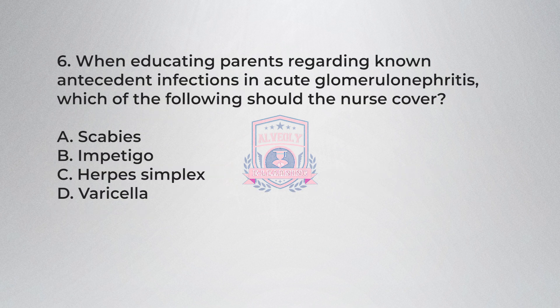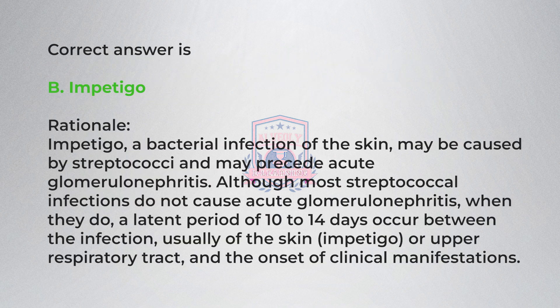Question 6: When educating parents regarding known antecedent infections in acute glomerulonephritis, which of the following should the nurse cover? A) Scabies, B) Impetigo, C) Herpes simplex, D) Varicella. Correct answer is B, impetigo.